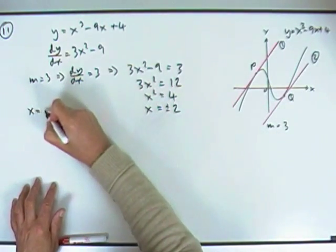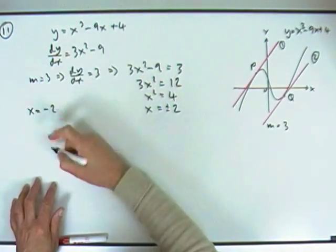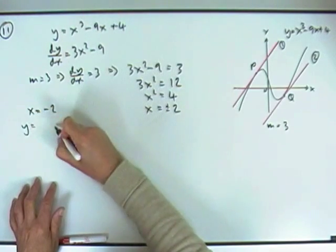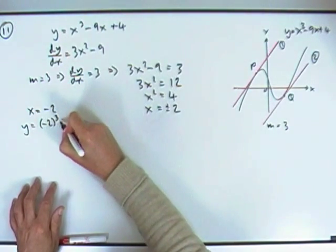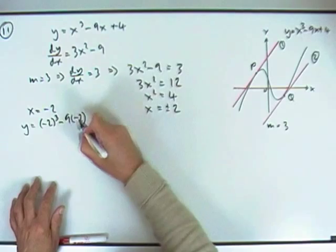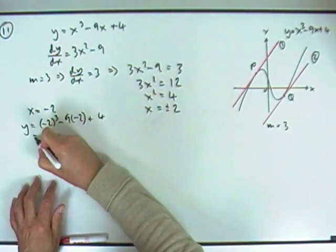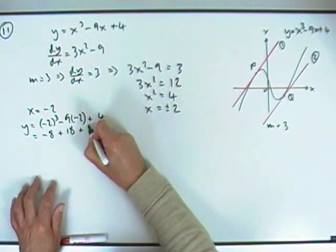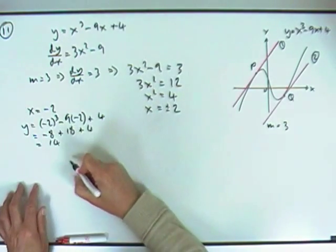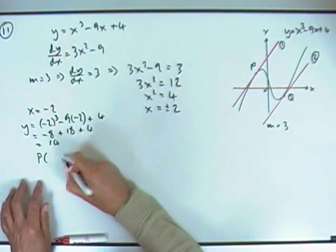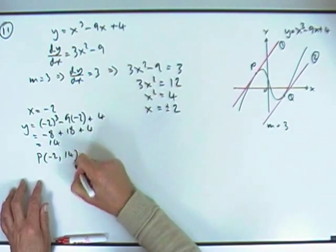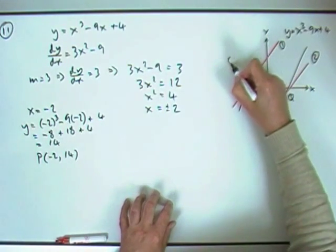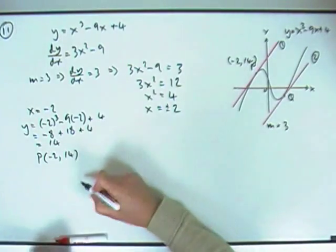So I'll put those two bits down. If x is negative 2, then feeding that back in, that means y is going to be (-2)³ - 9 times (-2) + 4, so that's -8 + 18 + 4, that'll be 14. So I know that P is the point (-2, 14). I'll put a wee note here for later, negative 2, 14.